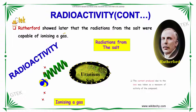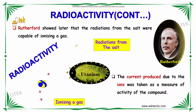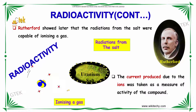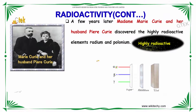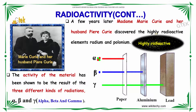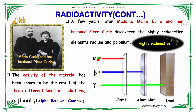From there, Rutherford later showed that the radiation from the salt were capable of ionizing a gas. The current produced due to the ions was taken as a measure of the activity of the compound. A few years later, Madam Marie Curie and her husband Pierre Curie discovered the highly radioactive elements radium and polonium. The activity of the material was shown to be a result of three different kinds of radiations: alpha, beta, and gamma.